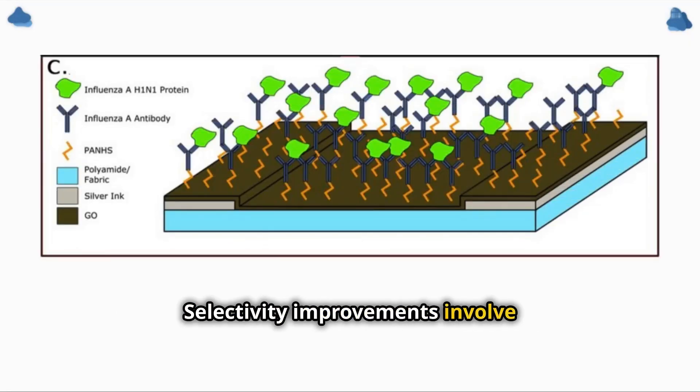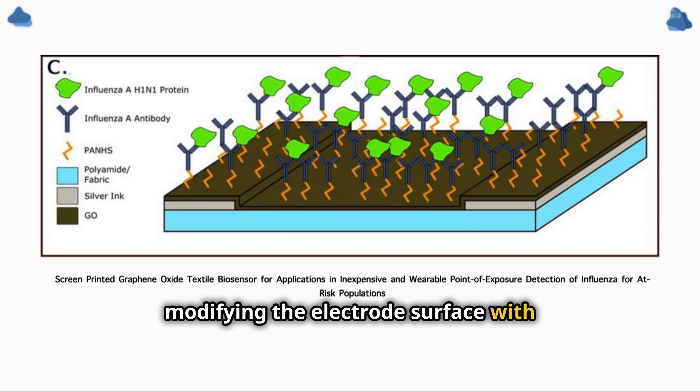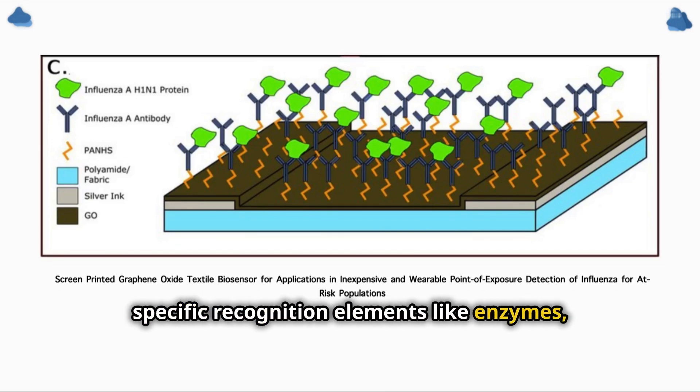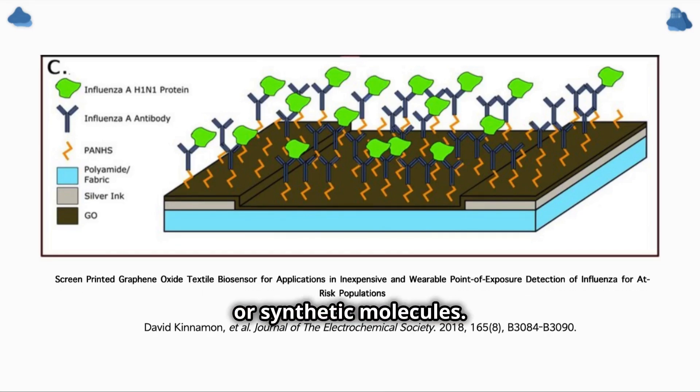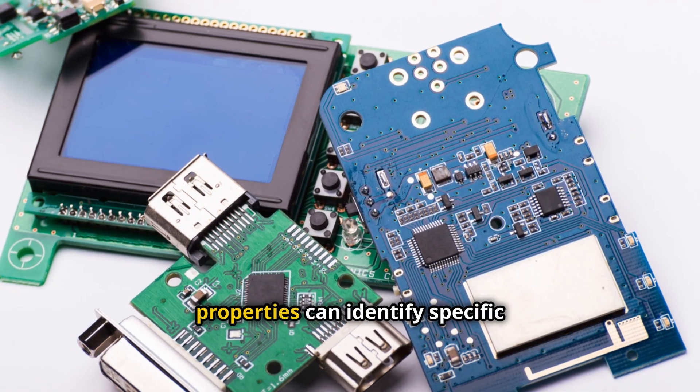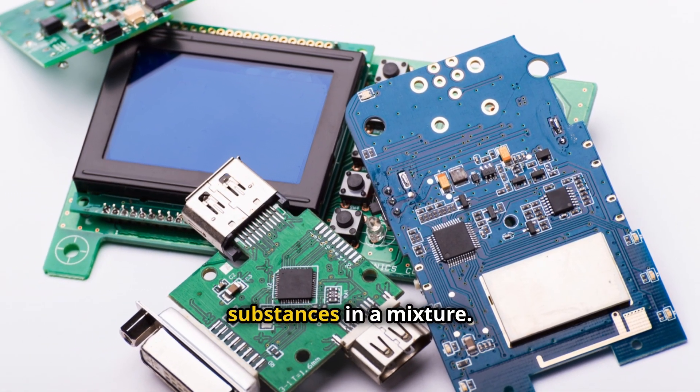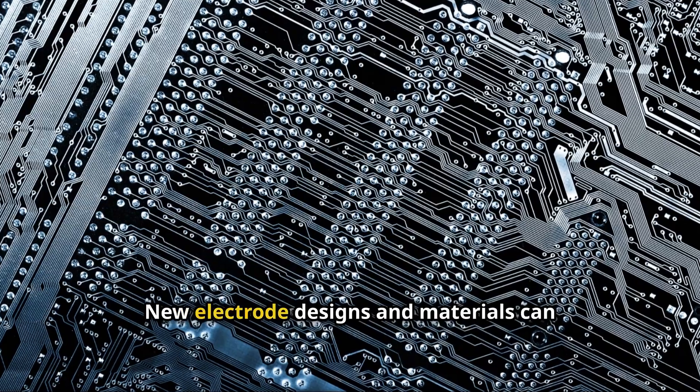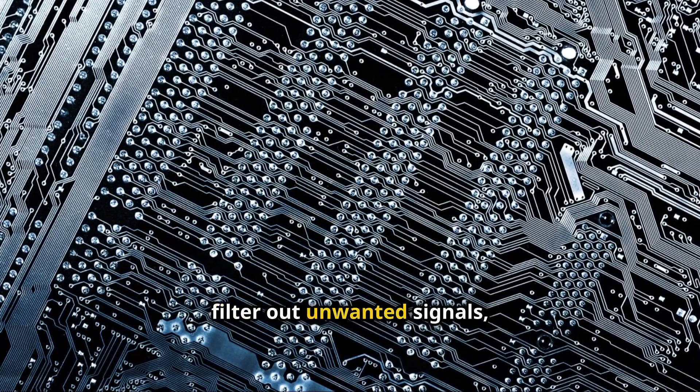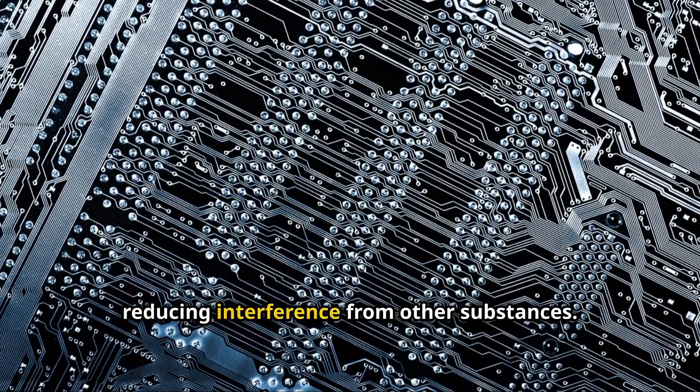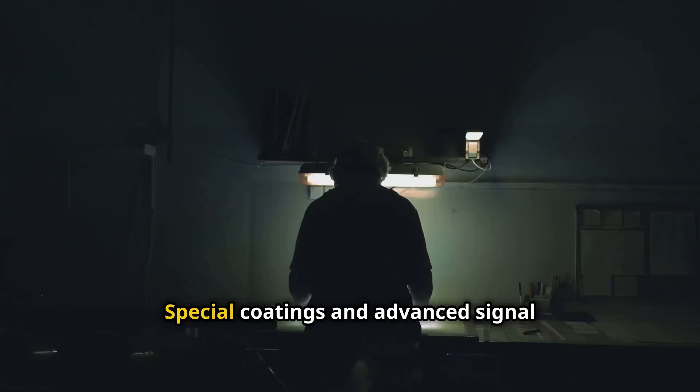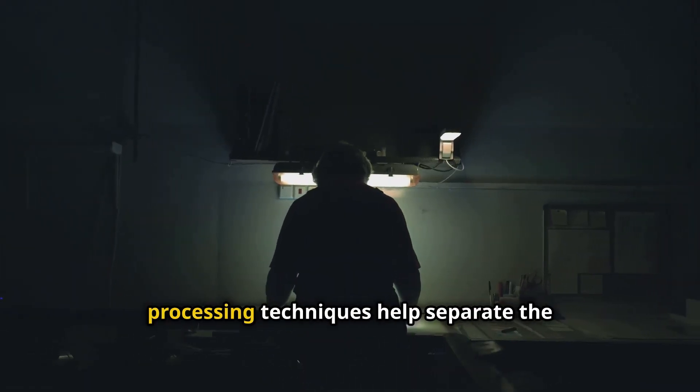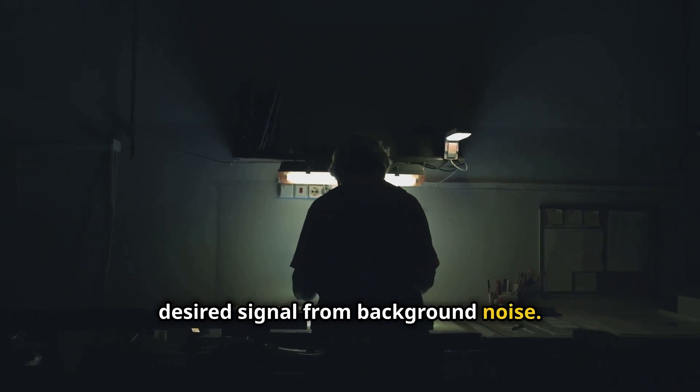Selectivity improvements involve modifying the electrode surface with specific recognition elements like enzymes, antibodies or synthetic molecules. Arrays of electrodes with different properties can identify specific substances in a mixture. New electrode designs and materials can filter out unwanted signals, reducing interference from other substances. Special coatings and advanced signal processing techniques help separate the desired signal from background noise.